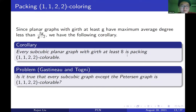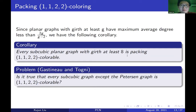This confirms the conjecture for another subclass. A very interesting open problem asked by Gastineau and Togni is: is it true that every subcubic graph except the Petersen graph is 1-1-2-2 colorable? This remains open. They actually asked the question for 1-1-2-3 coloring, but solving the easier version of 1-1-2-2 coloring would be a good step.